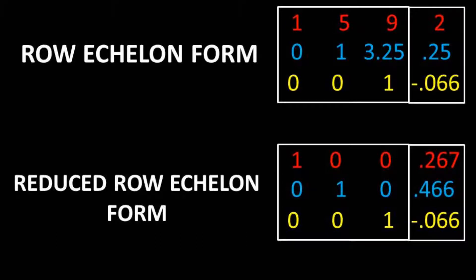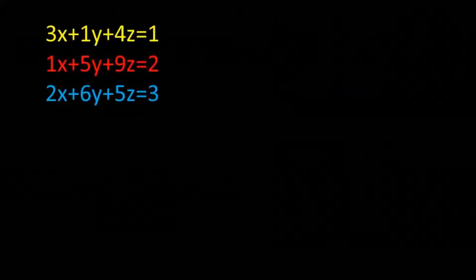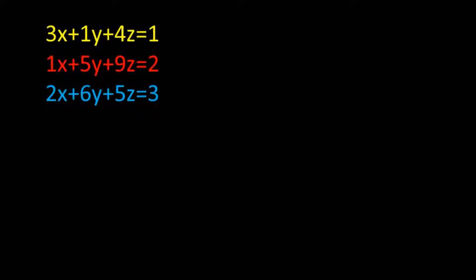In this video, we'll be going over how to row reduce a matrix to get into row echelon form and reduced row echelon form. So you get a set of equations with three variables, x, y, and z, and these are equal to constants.